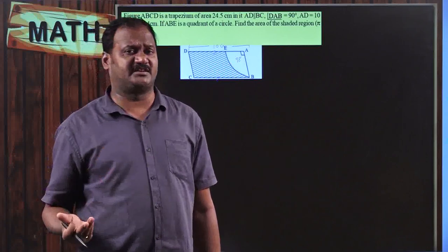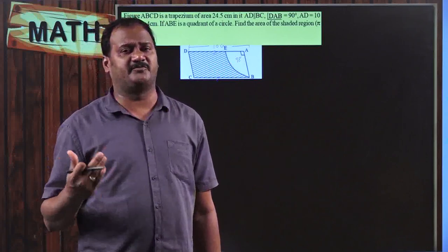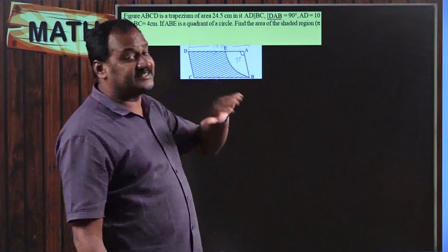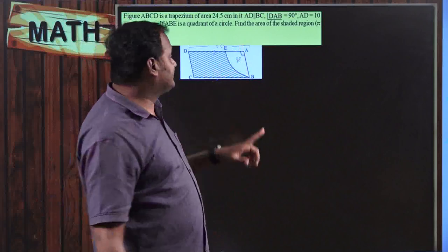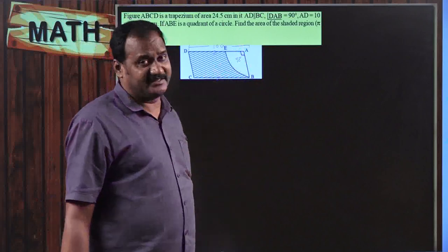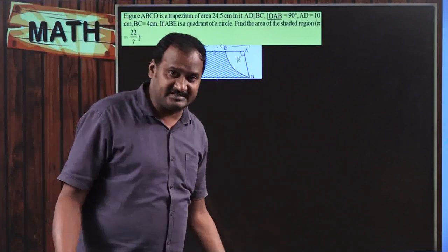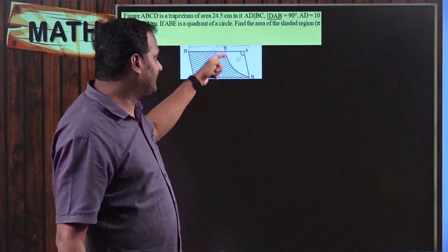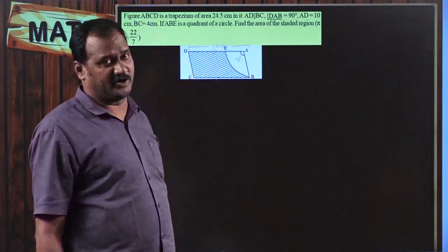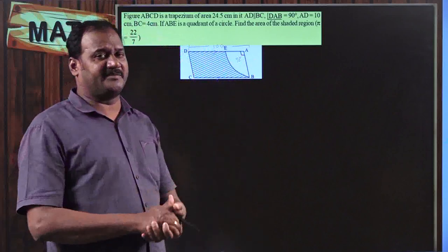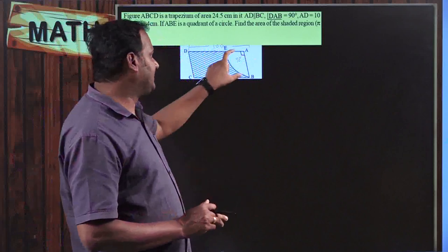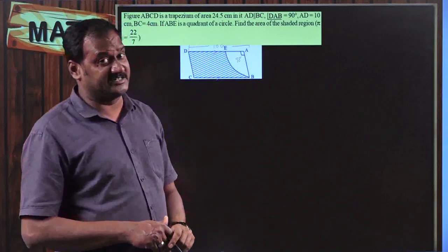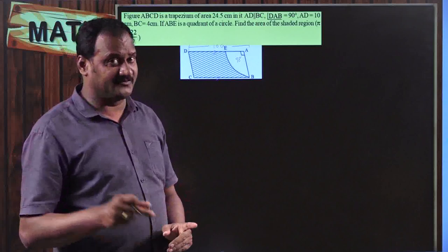So one fourth part of the area of a circle is equal to (1/4) × π r². But what is the radius here? The radius is nothing but AB. We do not know AB — it is the perpendicular distance between both the parallel lines. So our primary task is to find out the value of AB.